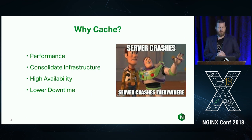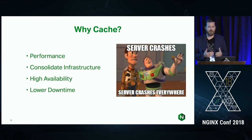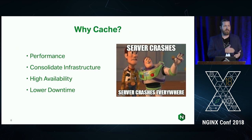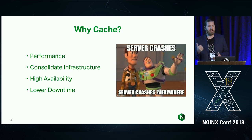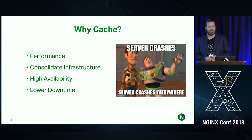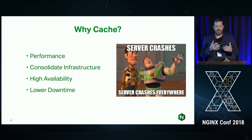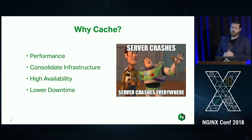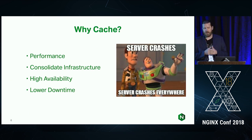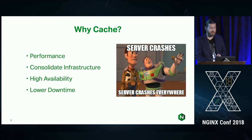High availability is another key reason — no one likes downtime. In this day and age, you don't want a page not loading because there's a good chance you have a competitor. A good example is Uber and Lyft: if Uber's not working, you open up Lyft. We're just in that day and age where high availability is really important. Also lower downtime — it's really about being able to be reactive with your environment and lower that number as much as possible.